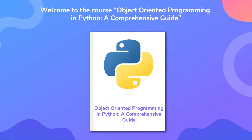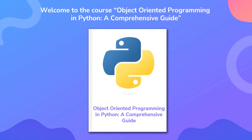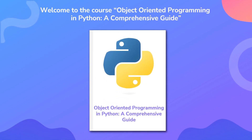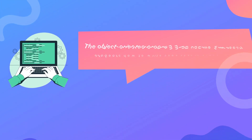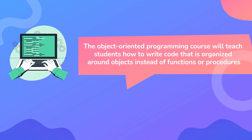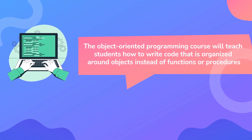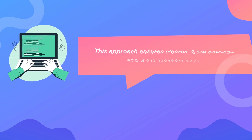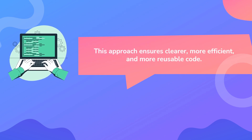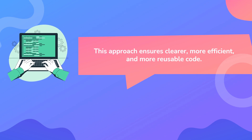Hi, and welcome to the course of Object-Oriented Programming in Python: A Comprehensive Guide. The Object-Oriented Programming course will teach students how to write code that is organized around objects instead of functions or procedures. This approach ensures cleaner, efficient, and more reusable code.